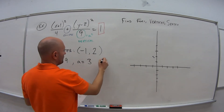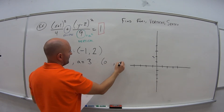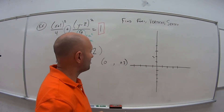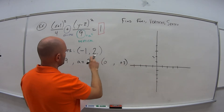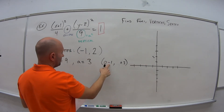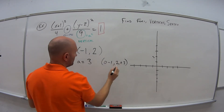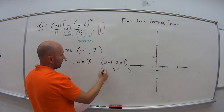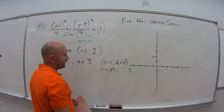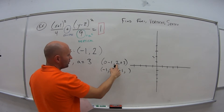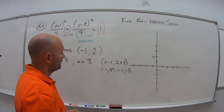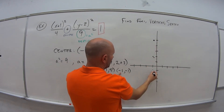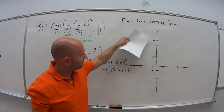If this was centered at the origin, because it's vertical, it would be 0 and then plus or minus 3. But we are not centered at the origin. We need to subtract 1 from the x value and add 2 to both y values. The first major vertex is: 0 minus 1 is negative 1, and 2 plus 3 is positive 5. The second is: 0 minus 1 is negative 1, and 2 minus 3 is negative 1. So our major vertices are at negative 1, positive 5 and negative 1, negative 1.